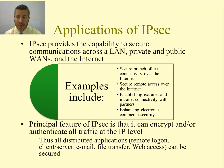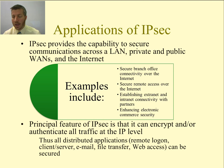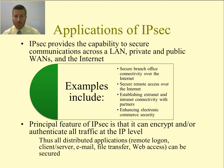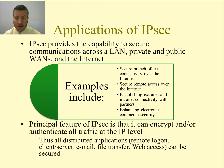Examples include: securing branch office connectivity over the Internet so they can communicate back with a corporate office; securing remote access over the Internet; and establishing extranet and intranet connectivity with partners. The principal feature of IPsec is that it can encrypt and/or authenticate all traffic, and it does so at layer 3 — the IP level.